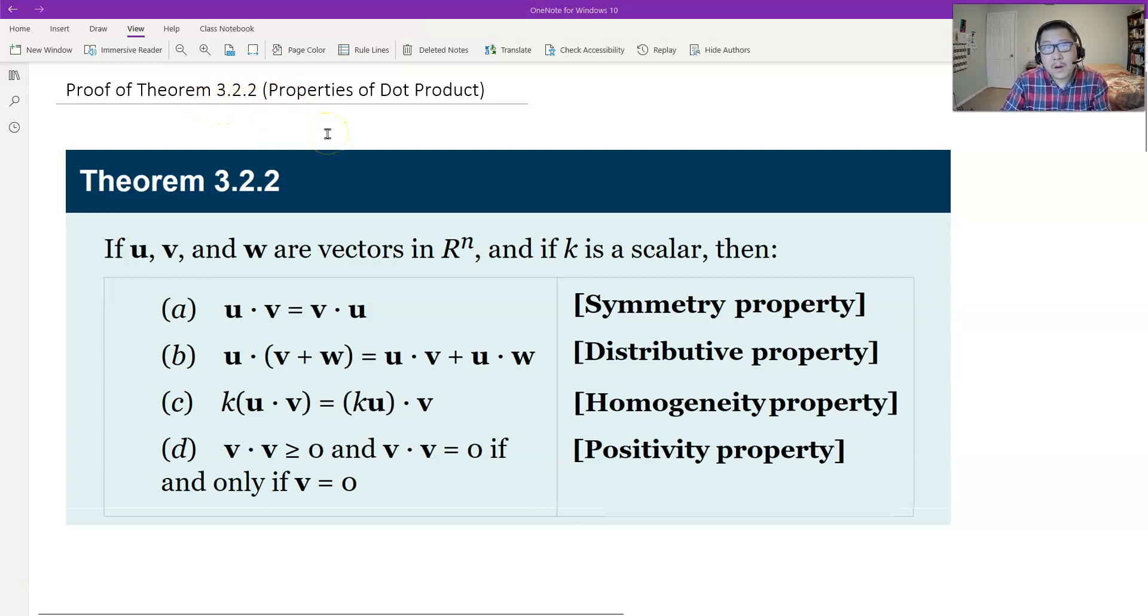which is some basic properties of dot product in n-space. We see 1, 2, 3, 4. All these properties are familiar with us in 2-space and 3-space. And they're the same, the results are the same in n-space.